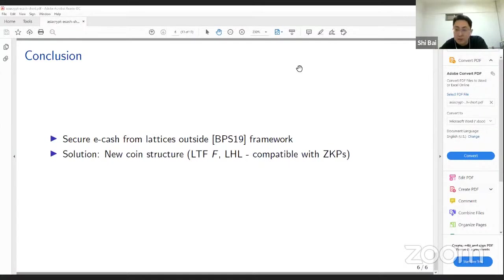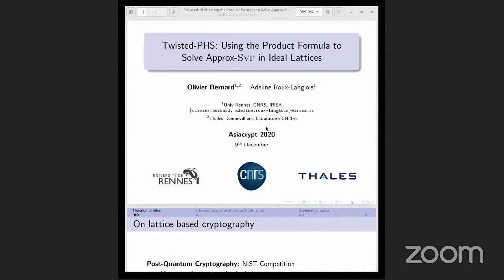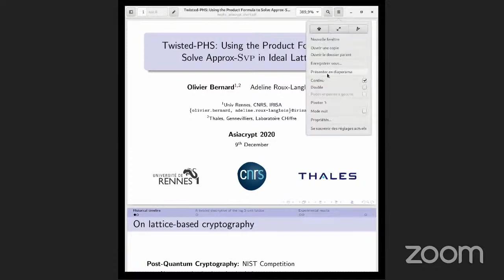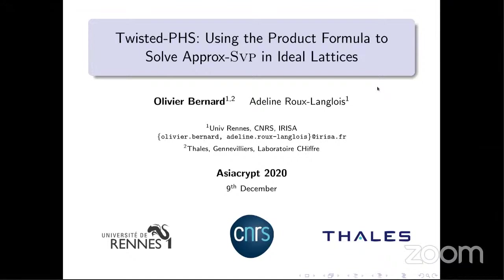The next talk is 'Twisted-PHS: Using the Product Formula to Solve Approximated SVP in Ideal Lattices' by Olivia Bernard and Adeline Nicolas. An interesting feature of lattice-based cryptosystems is that you have worst-case to average-case reductions. In particular, for the ring LWE problem, you can show it is at least as hard as the shortest vector problem in ideal lattices. It is therefore natural to ask whether ideal SVP is still as hard as general SVP despite the additional algebraic structure.